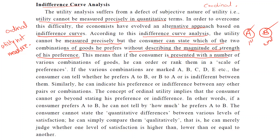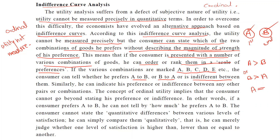If the consumer is presented with a number of various combinations of goods, he can order or rank them on a scale of preference — first preference, second preference, and so on. For example, he has various combinations marked as A, B, C, D, E, etc. The consumer can tell whether he prefers A to B, or B to A, or is indifferent between them. Similarly, he can indicate his preference or indifference between any other pairs of combinations.